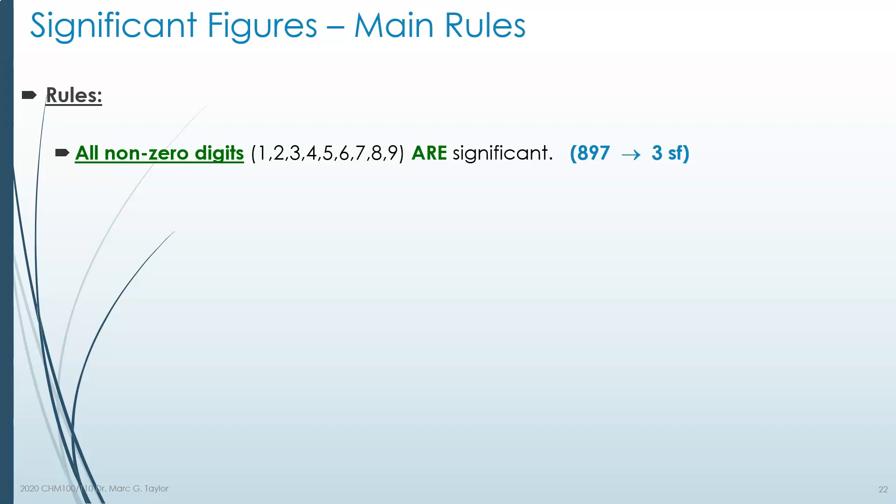The first rule is that if you've been given a measured value, any digit that is not zero — in other words 1, 2, 3, 4, 5, 6, 7, 8, 9 — those are going to be significant. For example, the number 897: all three of those digits are significant figures. So it has three sig figs.